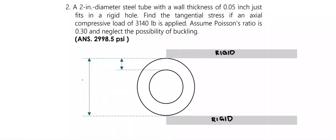In this problem, a 2-inch diameter steel tube with a wall thickness of 0.05 inches just fits in a rigid hole. We are tasked to find the tangential stress if an axial compressive load of 3,140 pounds is applied. Assume Poisson's ratio is 0.30 and neglect the possibility of buckling.